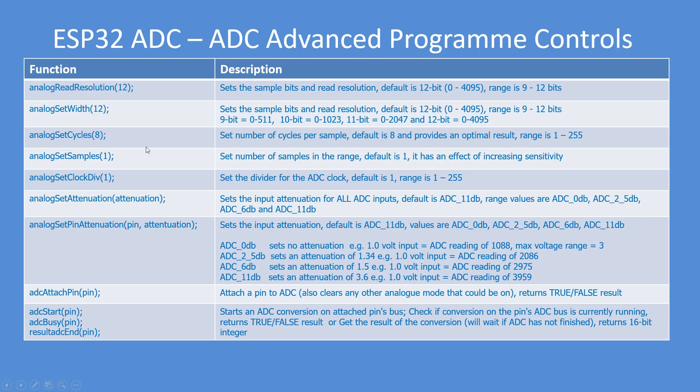These are the range of functions you have available to you. The analog read resolution defaults to 12 bit but can be varied from 9, 10, 11 or 12. So 12 bit is 0 to 4095 count. Set the width of the analog to digital channel, both the sample bits and therefore the read resolution, again from 9 to 12 bits.